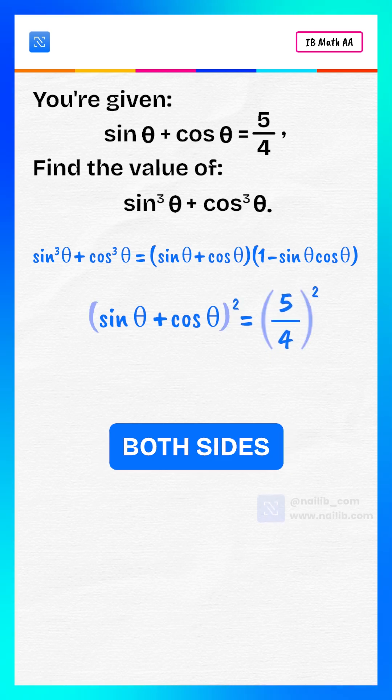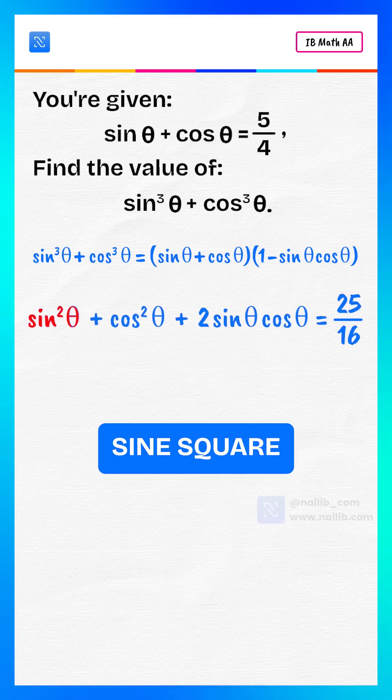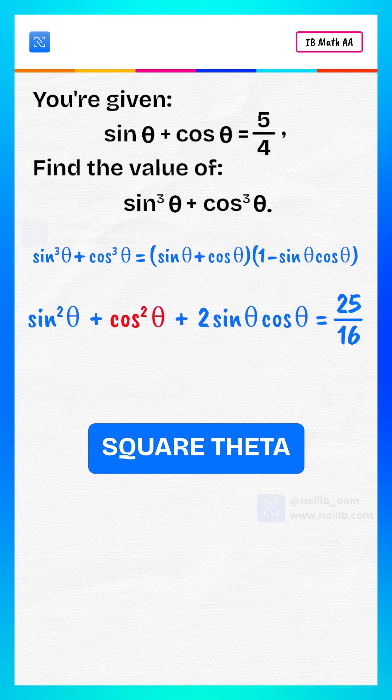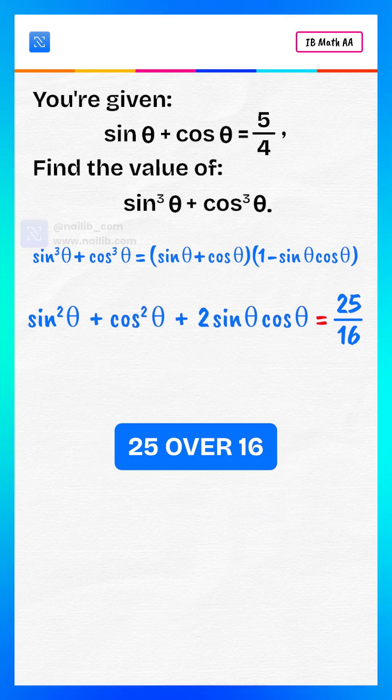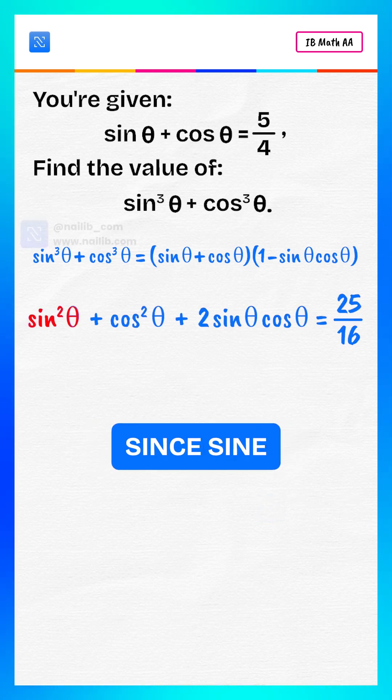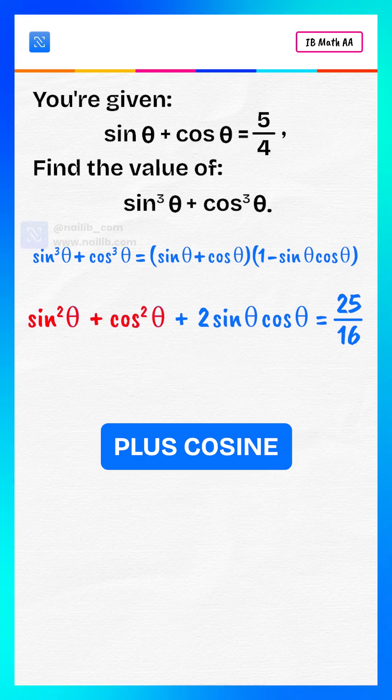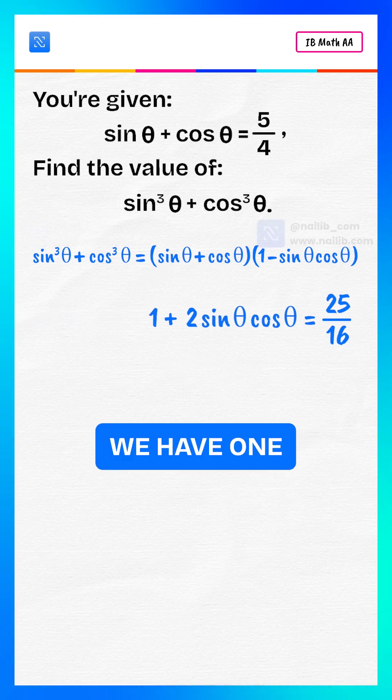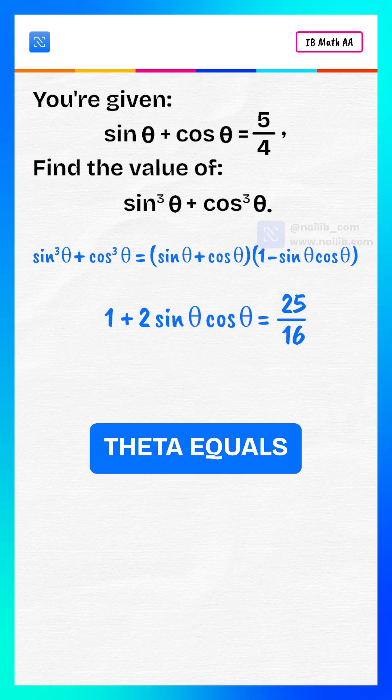Now, square both sides. That gives sin²θ + cos²θ + 2sin θ cos θ = 25/16. Since sin²θ + cos²θ = 1, we have 1 + 2sin θ cos θ = 25/16.